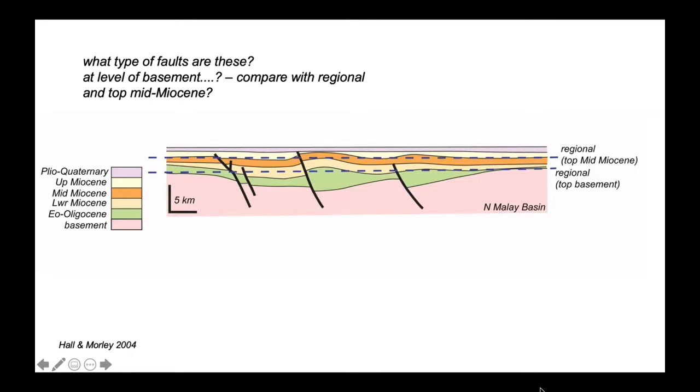We can see in two places along this profile, the top of the middle Miocene is above its regional. In other words, at the level of the basement, we're in net extension. And at the top of the middle Miocene in two places, we're in net contraction. So the fault that underlies those two places, we infer has reactivated as a thrust.